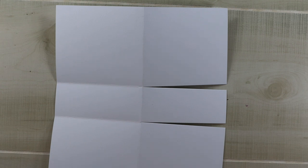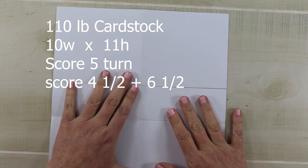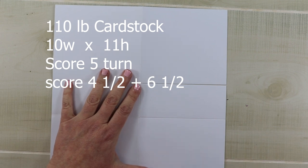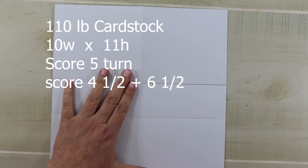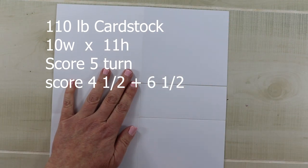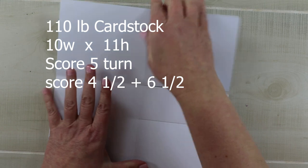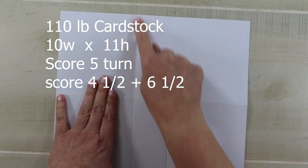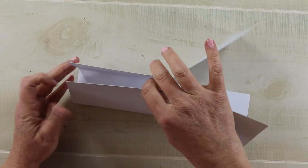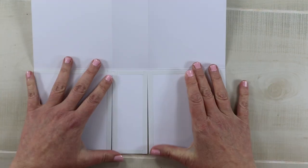We're going to start with a piece of 110 pound card stock. My piece is 10 inches wide by 11 inches tall. I've come in and scored it on the 10 inch side at five inches, so just right in half. Then I flipped it and I scored it at four and a half, and then it's six and a half. This is going to give me a size of four and a half by five inches wide with a base of two inches.